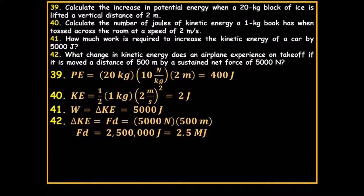What change in kinetic energy does an airplane experience on takeoff if it is moved 500 meters by a sustained net force of 5000 newtons? Work equals force times distance: 5000 × 500 = 2,500,000 joules, or 2.5 million joules.